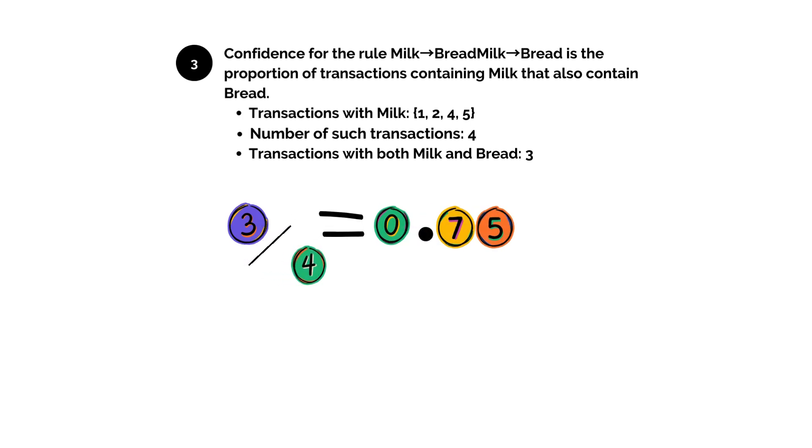Confidence: number of transactions with milk is 4, and transactions with both milk and bread is 3, equals 0.75.